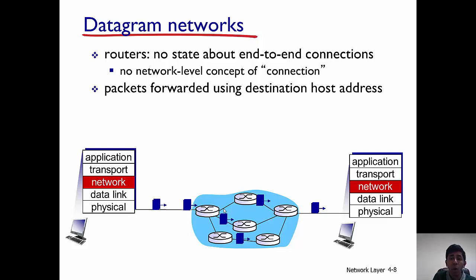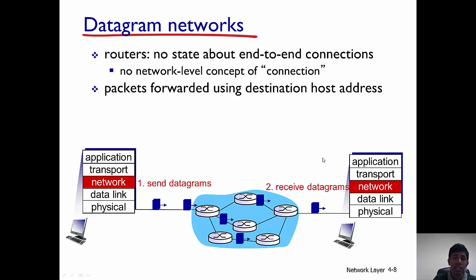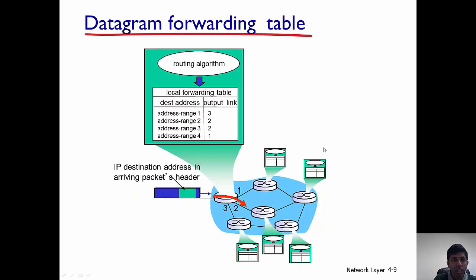So how do packets get forwarded in a datagram network? Packets get forwarded using the destination host address. For example, this host here wants to send some packets to this destination here — what it does is it puts in its own address as well as the address of the destination, and the datagrams get forwarded in the network using the destination host address.